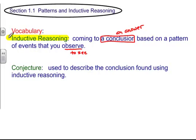When you have a conjecture, you're using your pattern to describe the conclusion found using Inductive Reasoning. So Inductive Reasoning is the pattern and the conjecture is your conclusion. The conjecture is a fancy word to describe the conclusion.